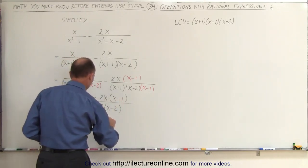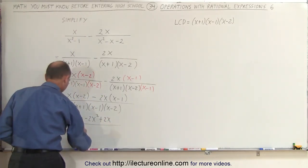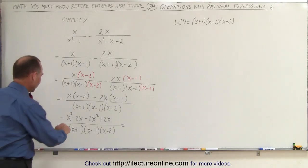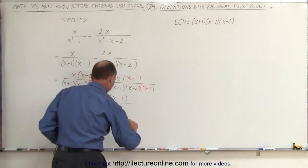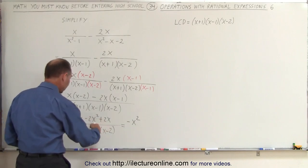See what happens. So I'm going to multiply this together. So this is equal to x squared minus 2x, and a minus 2x times x is a minus 2x squared, and a minus 2x times a minus 1 is a plus 2x, all divided by the same common denominator.